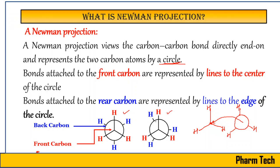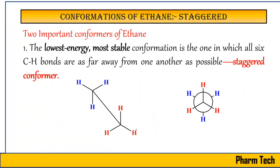This representation is called the Newman projection formula. I am drawing two different types of Newman projection because these are the two extreme Newman projections for ethane. You can draw an indefinite number of structures between these two extremes. Let's now come to the conformations of ethane.